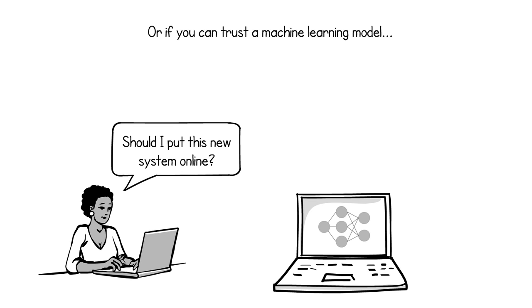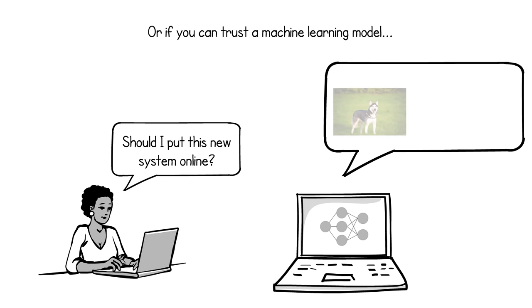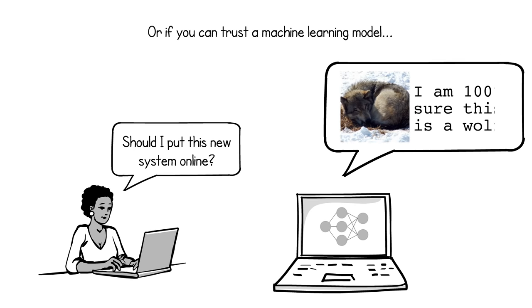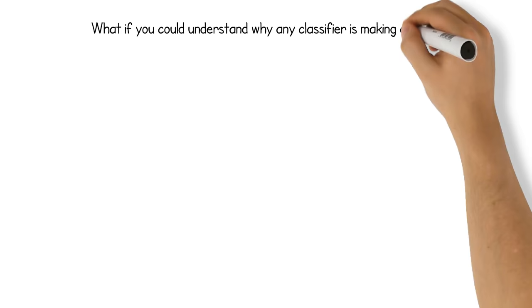You also need to know if you can trust a model before putting it into production. Let's say we have a machine learning system that can detect wolves. We can look at accuracy and at some of the predictions, and they may look good, but is that enough for us to really trust the machine learning system?